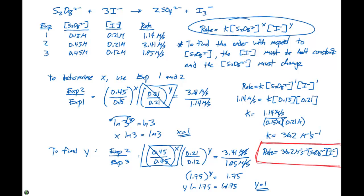To recap what we've done: to determine a rate law, we need to look at experimental data. We've designed the experiments so that in one case we keep the iodide concentration constant and vary the S₂O₈²⁻ concentration, and in another we keep S₂O₈²⁻ constant and vary I⁻. Notice that when we triple the concentration of S₂O₈²⁻ from experiment one to two, the rate triples — telling us this is first order with respect to S₂O₈²⁻. The first step is to figure out the order of each reactant; in this case there are two, but sometimes there are three, so we'd repeat this process three times.